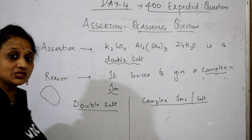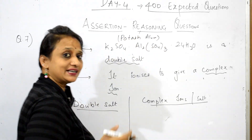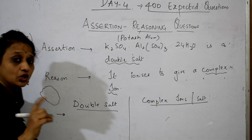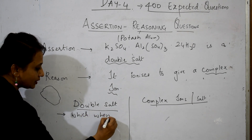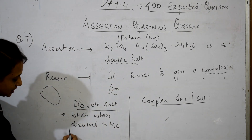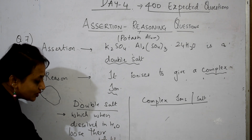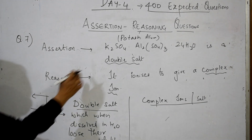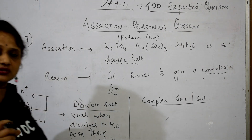Double salt — this should all be in your brain. This is nothing but potash alum. Now double salts: when I take this double salt and dissolve it in water, they are going to lose their identity. Always remember the concept — double salts are those which, when dissolved in water, will lose their identity. When I dissolve a double salt like potash alum, I will get different ions: I will get potassium ion, aluminium ion, and sulfate ion. It will release all ions.